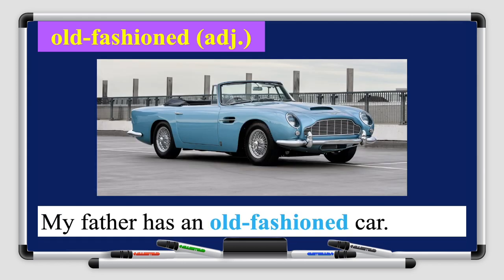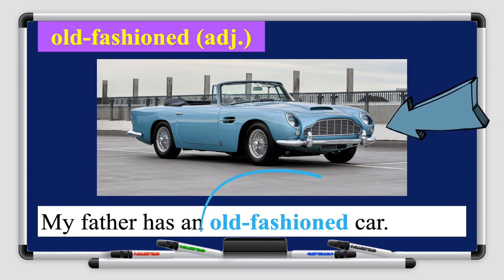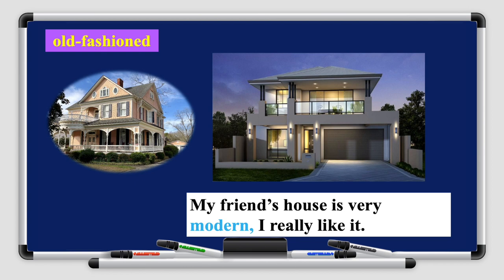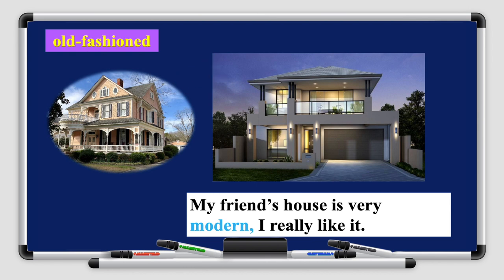Another sentence: my father has an old-fashioned car. You can see the picture — it's an old-fashioned car, they don't make cars like this anymore but it's really nice. Another sentence: my friend's house is very modern. On the right you can see a modern house and on the left an old-fashioned house — which one do you prefer? I prefer the modern one because it's easier to live in.